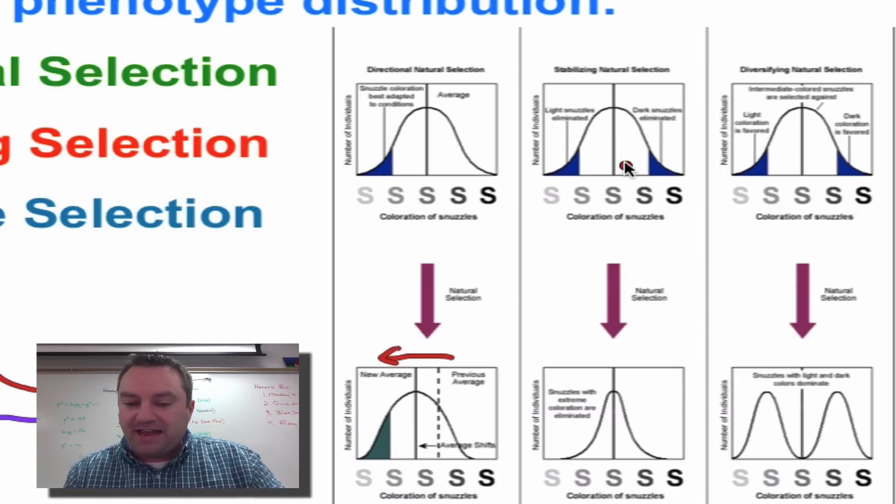Over here is called stabilizing selection. In this situation, the extreme phenotypes, for example, the dark snuzzles and the light colored snuzzles, they have a lower fitness. So what's going to happen here is more and more of this average color is going to be more common. So when we have natural selection, the curve is going to narrow.